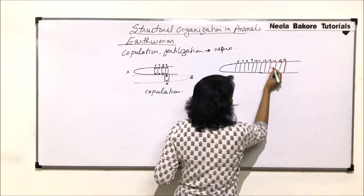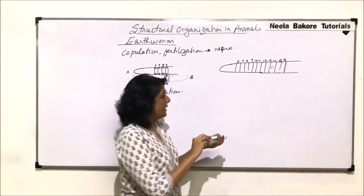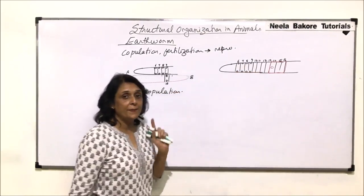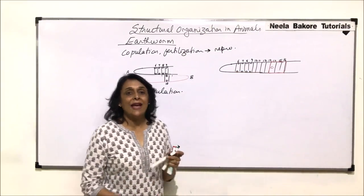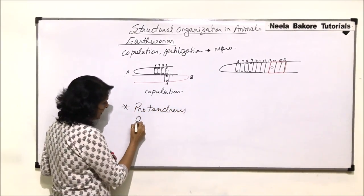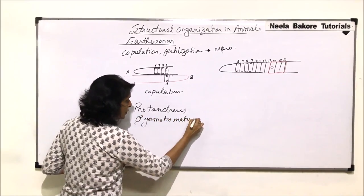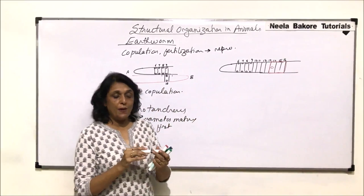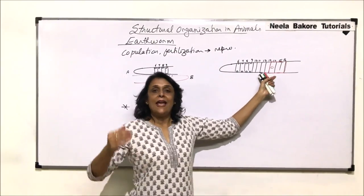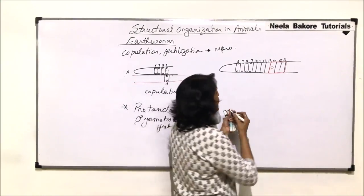On segments 14, 15, and 16 there is the clitellum band, and there is one opening — the female genital pore — in the 14th segment. This worm has the sperms of worm B. Earthworms are protandrous, meaning the male gametes mature first. In worm B, the male gametes were formed and deposited in the body of worm A. Now the egg is formed and ready.